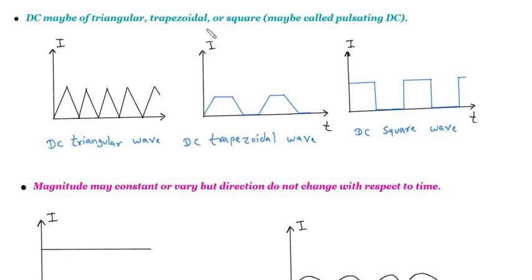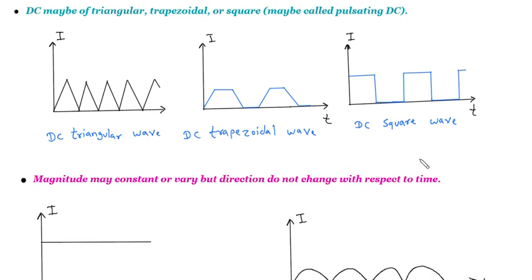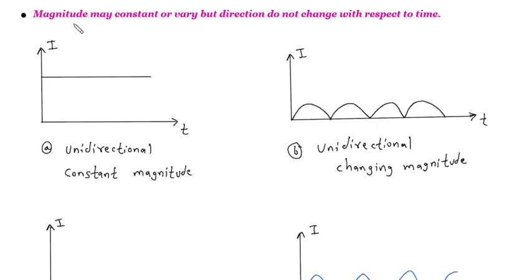DC may be of triangular, trapezoidal, or square. May be called pulsating DC. The magnitude of DC may constant or vary, but direction do not change with respect to time.